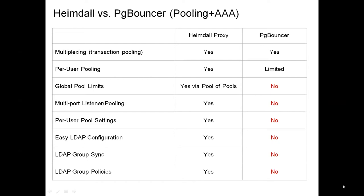While Postgres is great with a relatively small number of users — for example, if you're using an application server — trying to manage large numbers of users becomes a large burden. You need to account for data governance policies within a company, such as ensuring that when a user is terminated or moves groups within an organization, group policies on who should access what data are enforced. Managing that within Postgres itself can become a very large burden, and this is where Heimdall comes into play to bridge the gap between what enterprise environments need and what Postgres provides natively.